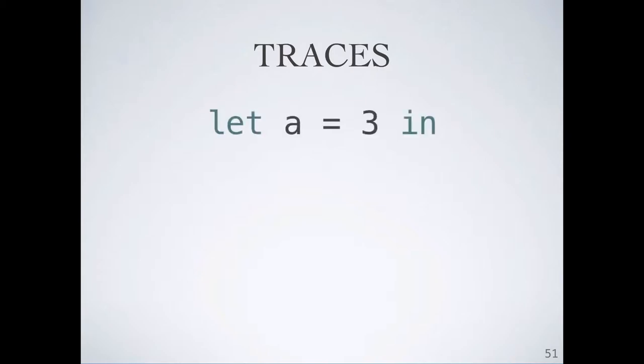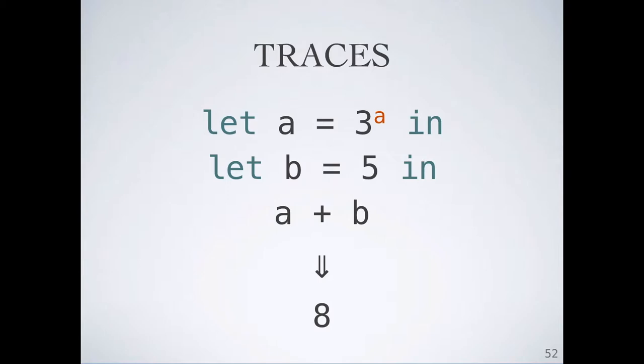We use a lightweight form of instrumentation, where output values are tagged with a trace that describes how each value was computed. For example, consider this simple program. With a assigned to 3 and b assigned to 5, normal evaluation of a plus b produces the number 8. We tag each number with a trace that describes how that number was computed. So the literal 3 is tagged with the program location a. The literal 5 is tagged as coming from program location b.